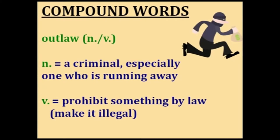Outlaw actually has two different meanings — it can be a noun or a verb. As a noun, an outlaw is a criminal, usually one who is running away from the police and trying to avoid being captured. As a verb, to outlaw means to prohibit something by law. For example, if your country outlaws talking on your cell phone while driving, that action is now illegal and you will be punished if you do it.